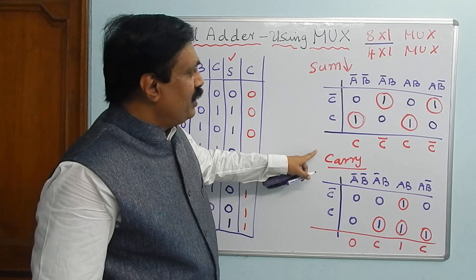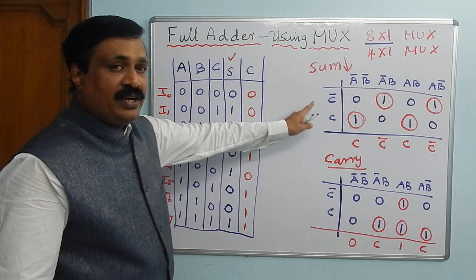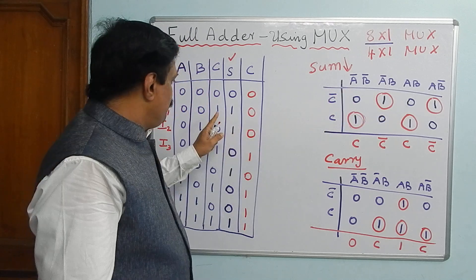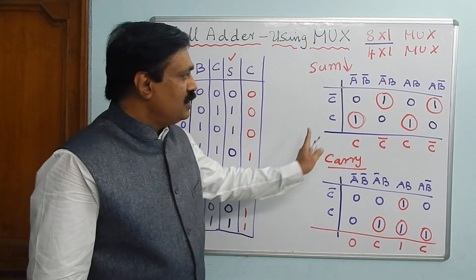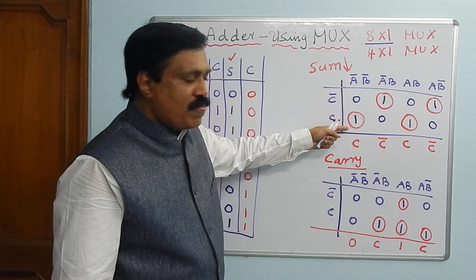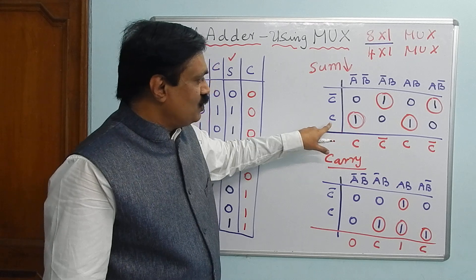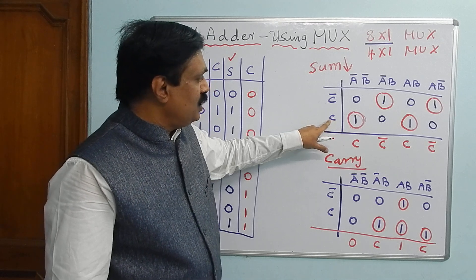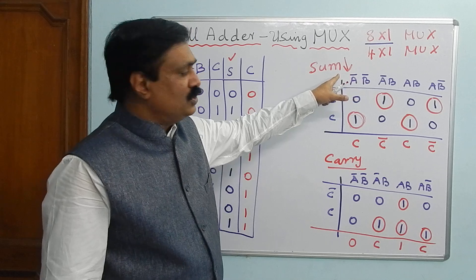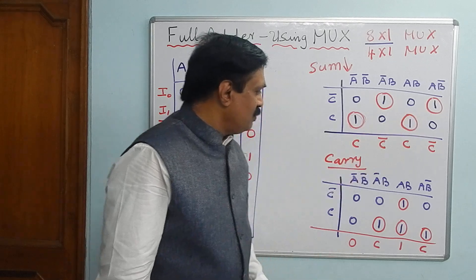Now you have to implement using a 4×1 multiplexer. To understand what we have done: it is a simple 3-variable K-map. I substituted the sum and carry values inside the cells. You circle the 1s and look at each column. If only a single 1 is there, it corresponds to C or C-bar. If both 1s are present in a column, mark 1; if none, mark 0.